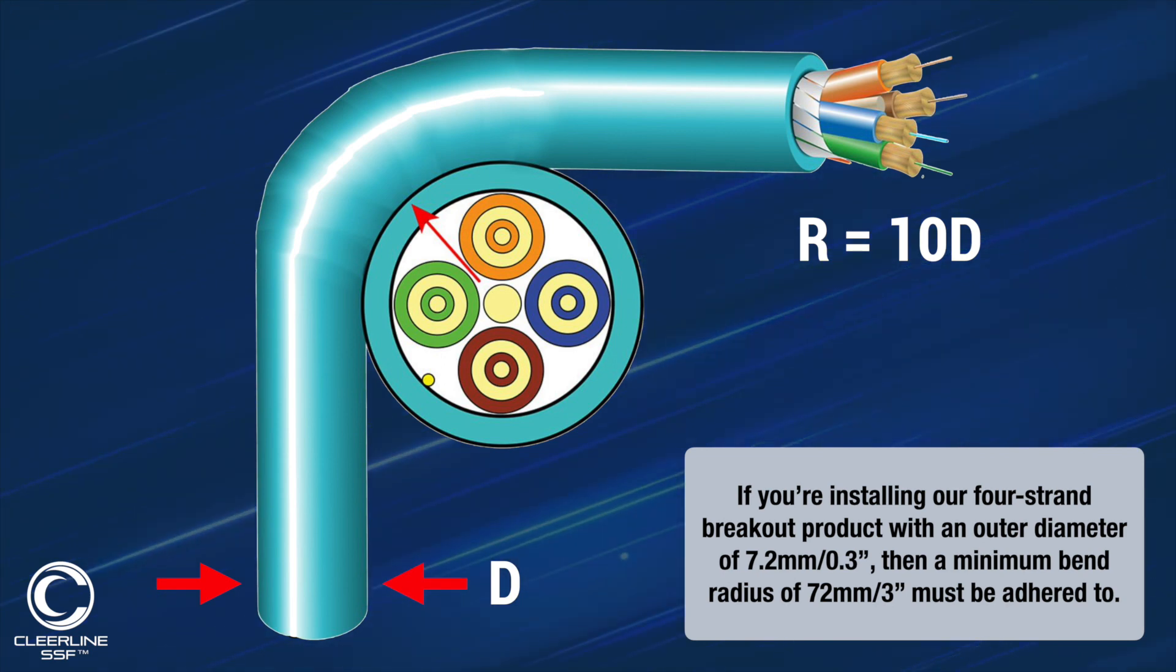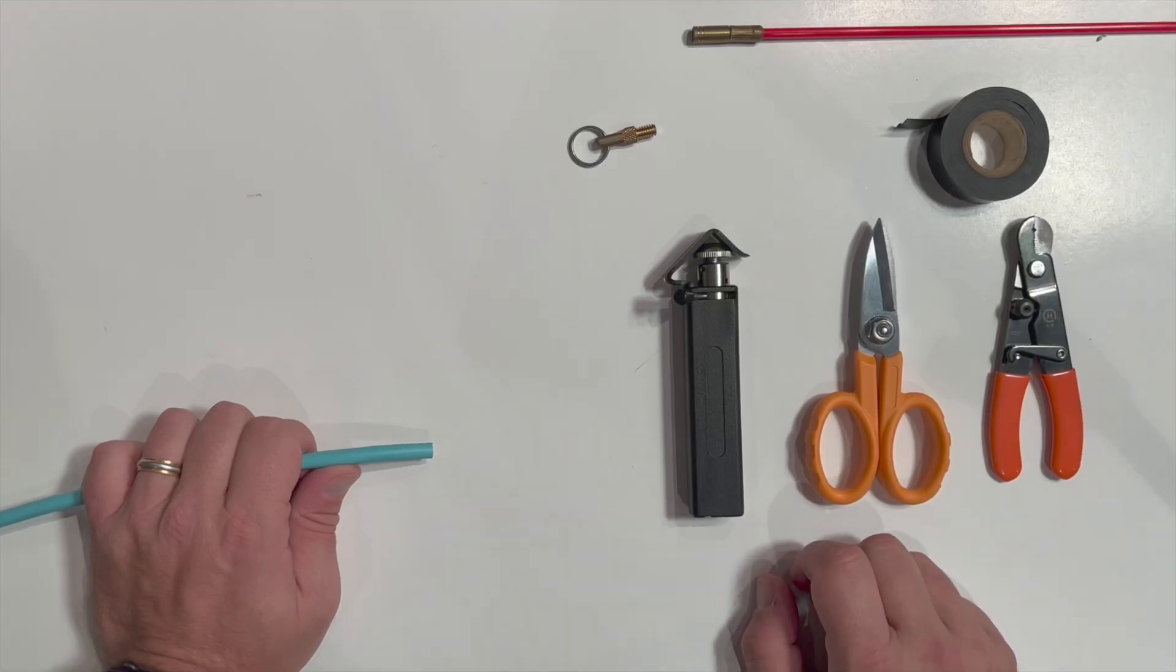To prepare our breakout cable for installation, you'll need a radial cable slitting tool, Kevlar cutting shears, tri-hole fiber strippers, and tape.